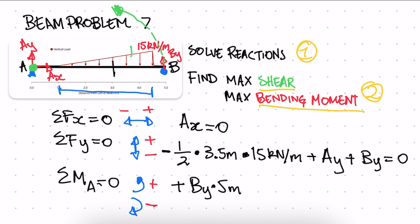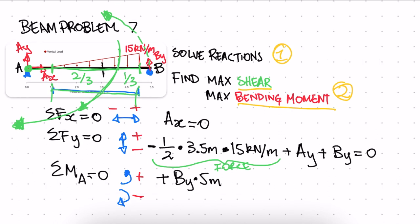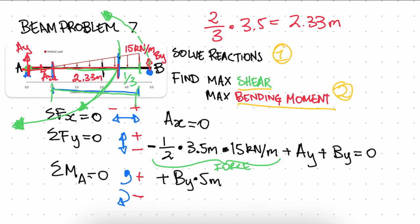The force from our triangle acts at the centroid of the triangle. From the right side, the centroid is one-third of the base, and from the left side it's two-thirds. Two-thirds of 3.5 meters gives us 2.33 meters. Adding the remaining one meter distance to point A, the total distance from A to the centroid is 3.33 meters.